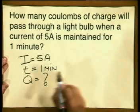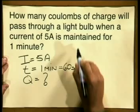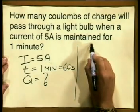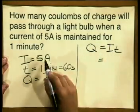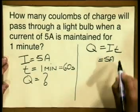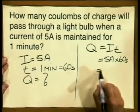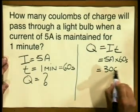Now there is something I must warn you about. The time given is quoted in minutes. Remember that the SI unit for time is the second, so before we carry on we must convert our time into SI units — convert 1 minute into seconds. So 1 minute equals 60 seconds. Writing down the equation, q is equal to i times t. Substituting: i is 5 amperes, time is 60 seconds, and therefore the charge is 300 coulombs.